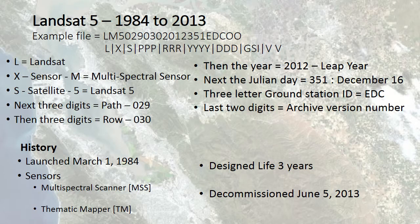Landsat 5 is still up in the air but is no longer transmitting data. It also had the multi-spectral sensor and was launched in 1984. It was designed for three years of use but was only decommissioned in 2013, so it well outlasted its usefulness in space. If we could all get things that last as long as this, that would be awesome.